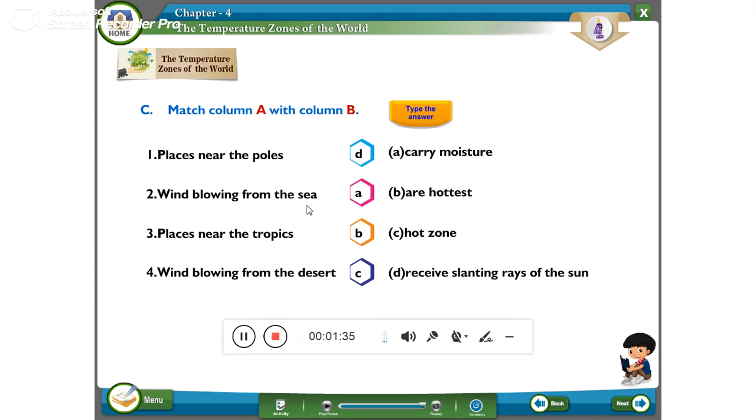Second one, wind blowing from the sea, carry moisture. Third one, places near the tropics, what we call hot zone.